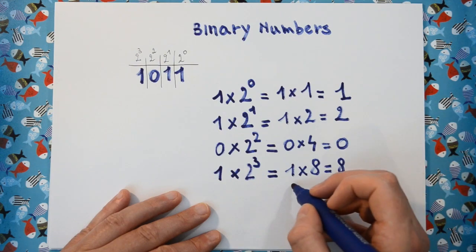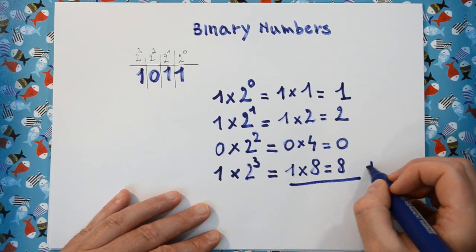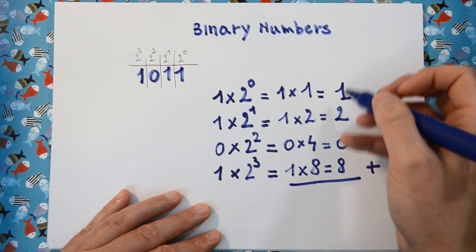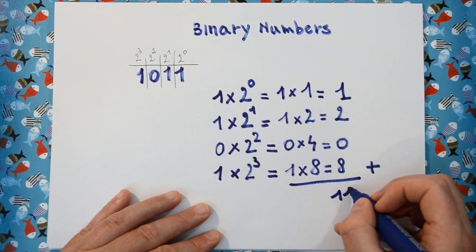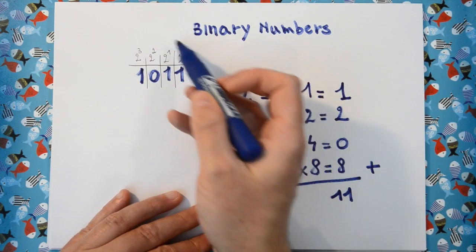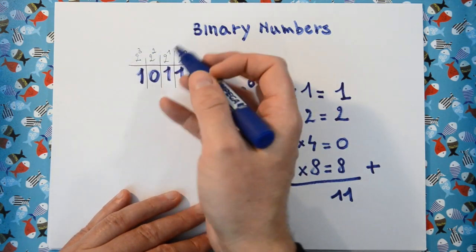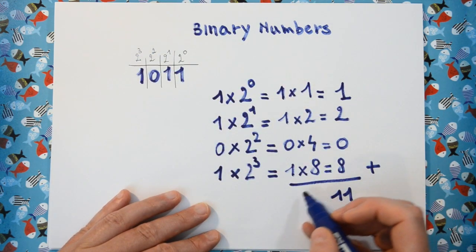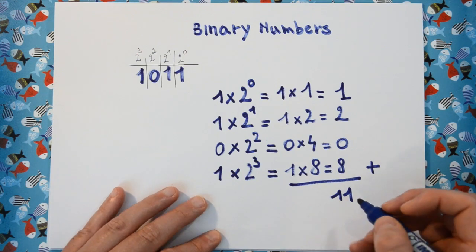And what we then do is just add these values. This makes for 11. So this binary number, this number in base 2 stands for this number in base 10.